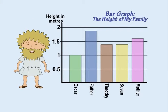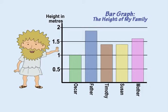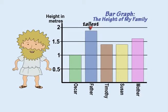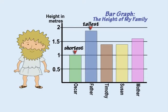A bar graph is a useful way to show the relative sizes of numerical data you have gathered. For example, this bar graph shows the height of different family members. Who is the tallest member of the family? The father. Who is the shortest? Oscar. And which family members are the same height? Susan and Timothy.